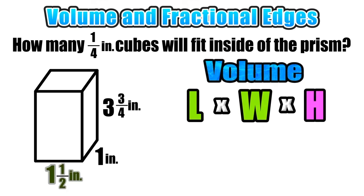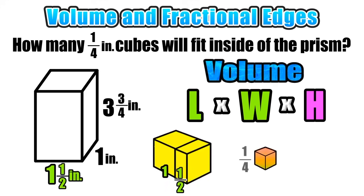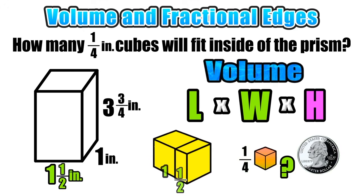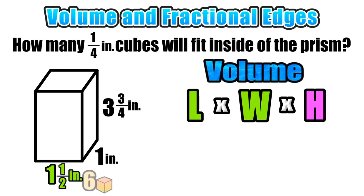Even though two of our dimensions include fractions, we still use the length times width times height formula. The length of the figure is one and a half inches. We can think of this in terms of money: a quarter-inch unit cube would be like a quarter, and one and a half inches would be like a dollar and fifty cents — which equals six quarters. So we replace the measurement of one and one-half inches with six one-quarter inch cubes. Our length in terms of quarter-inch cubes is six.